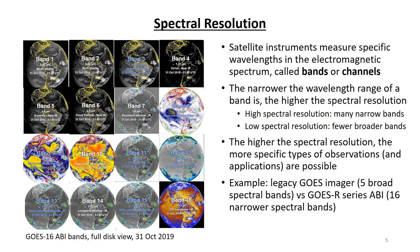Spectral resolution is illustrated by the ABI sensor on NOAA's new generation weather satellites, called the GOES-R series. The ABI has 16 relatively narrow spectral bands, shown in the graphic. In comparison, the corresponding sensor on the previous generation of GOES had only five broad spectral bands.